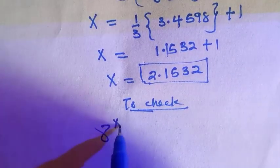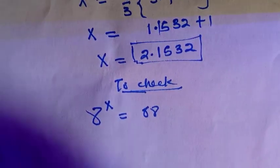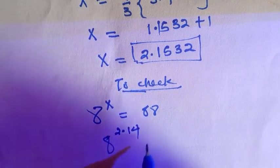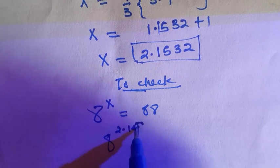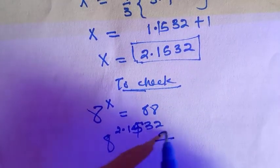8 to the power of x equals 88. And by plugging the power of x we got above, here becomes 8 to the power of 2.1532, and this is approximately 88.